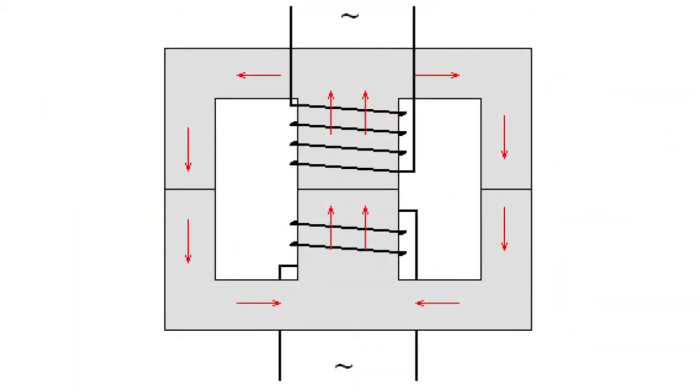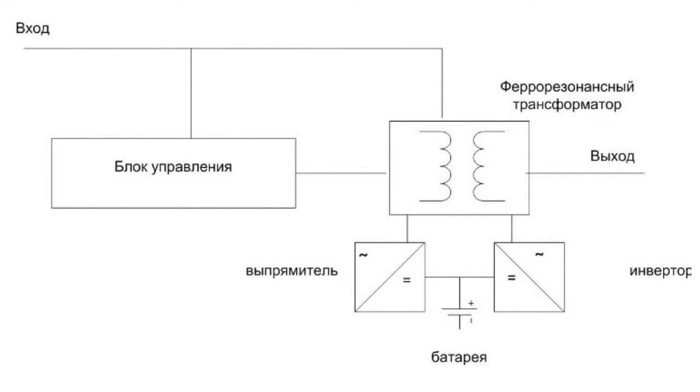A ferroresonant transformer has a considerable inductance. A great amount of energy accumulates in the transformer's magnetic field during the UPS operation from the main. When power supply stops, the transformer supplies the energy which has been accumulated in its magnetic system into the load during 8-16 milliseconds.